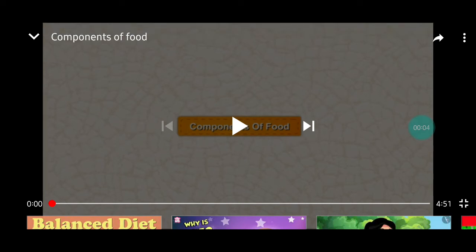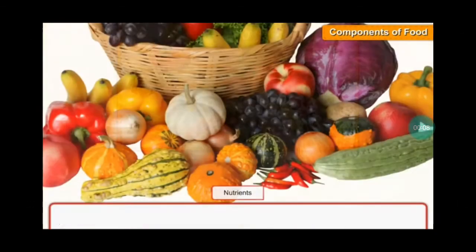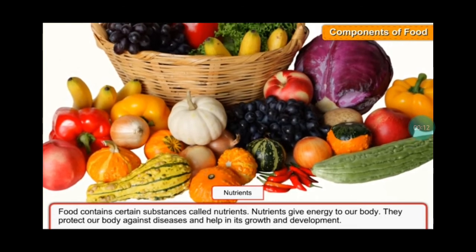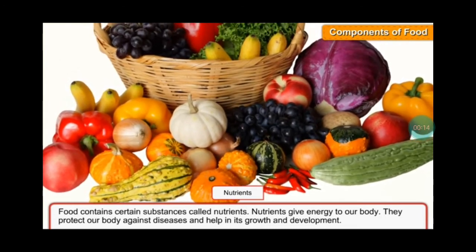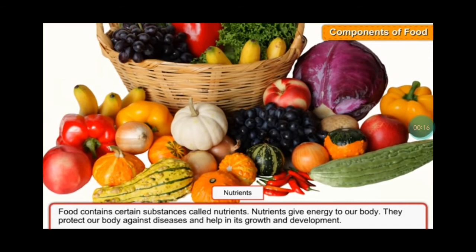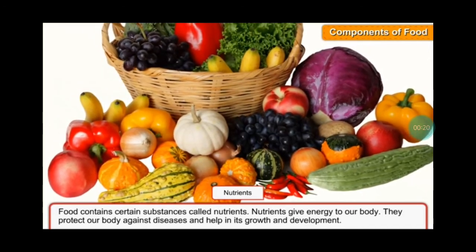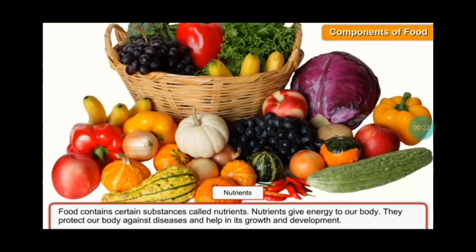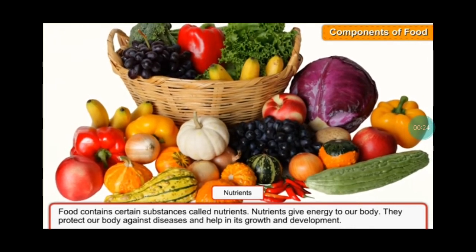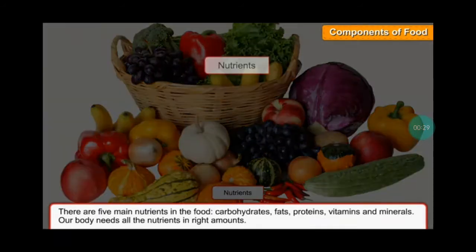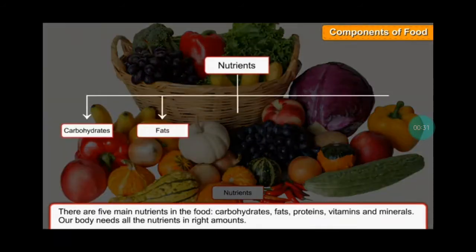Today's topic is components of food. Food contains certain substances called nutrients. Nutrients give energy to our body, protect our body against disease, and help in its growth and development. There are five main nutrients in the food.